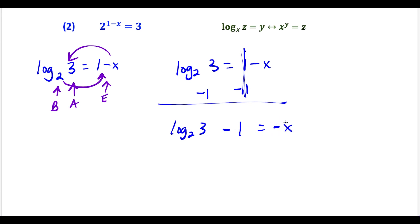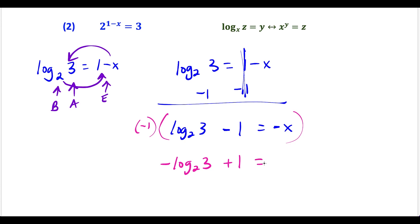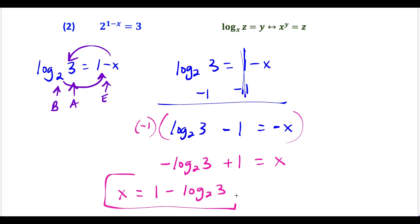We have to leave this as log base 2 of 3, and then that quantity minus 1 equals negative x after the 1 minus 1 cancels out. Now we multiply both sides by negative 1 — negative 1 times log base 2 of 3 is minus log base 2 of 3, and negative 1 times negative x is x. So a better way to look at our answer: x equals 1 minus log base 2 of 3. This is our solution to the second question.